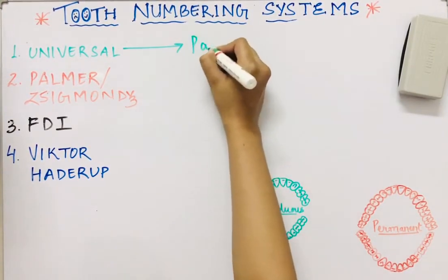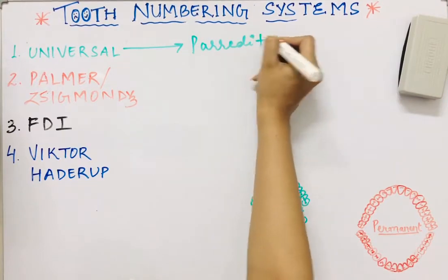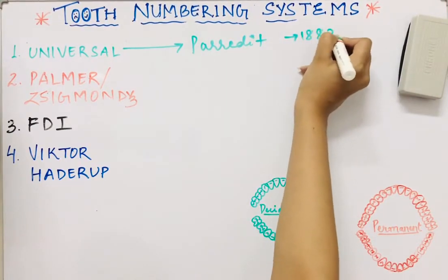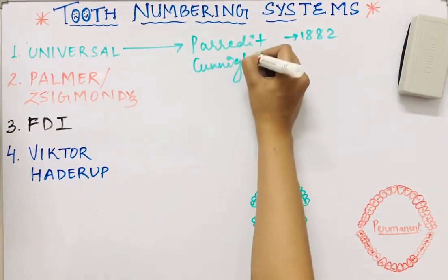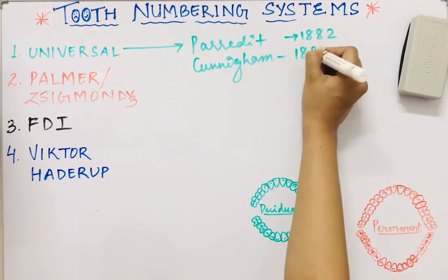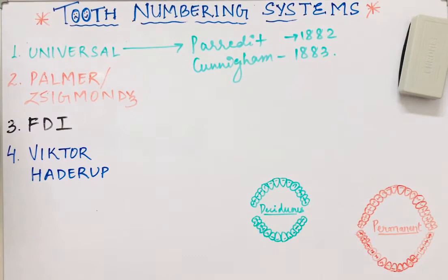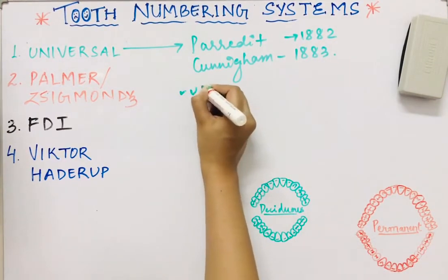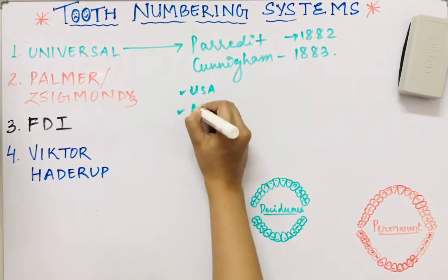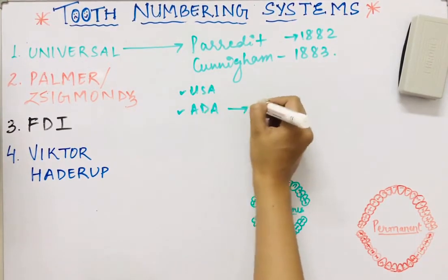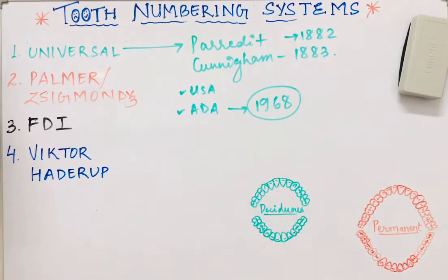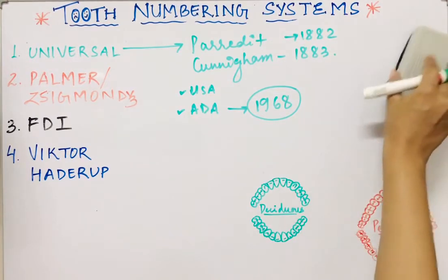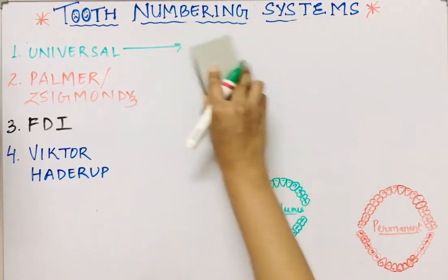The Universal system was first given by Paraded in 1882 and by Cunningham in 1883. This system is officially used in the USA and was accepted by the ADA in the year 1968.